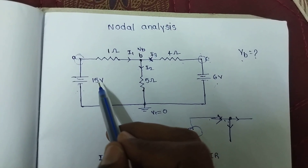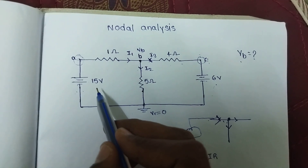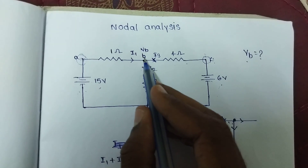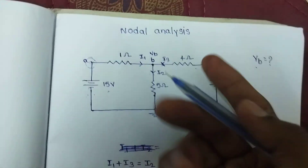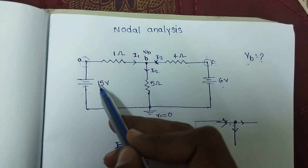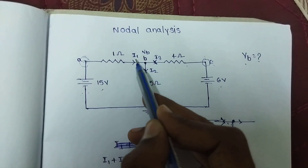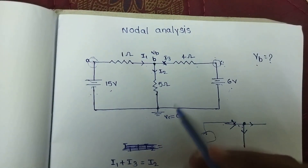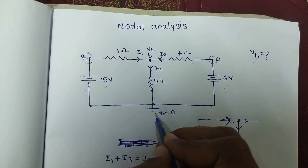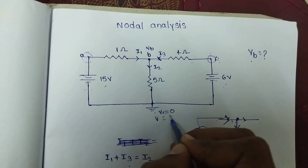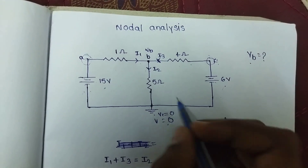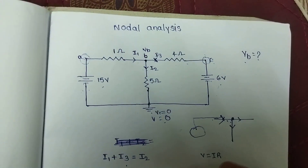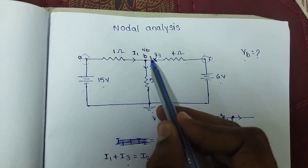We have high potential to low potential. If this is high potential, this is considered as VB — maybe this is low potential. So we have current I1 flowing from this point. Here we have one node; this is a reference node, that means it is grounded, so V equals 0. VB is not 0 — it is considered as a higher potential.